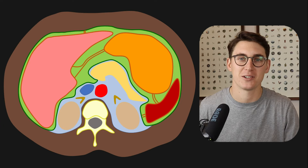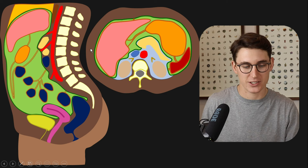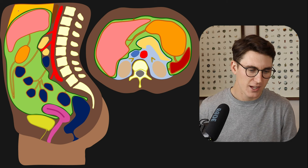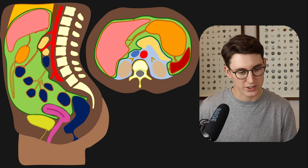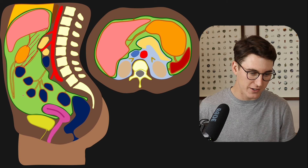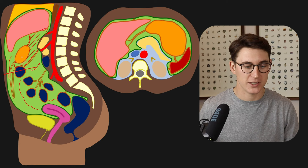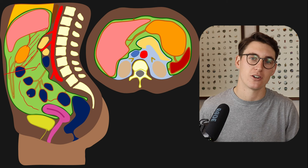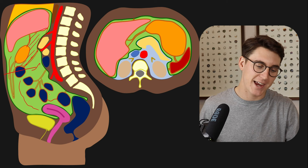Now we've got our sagittal section on the left and axial section on the right. The lesser sac is posterior to the stomach. Our lesser sac extends from this lesser omentum through the greater omentum, with the mesentery of the transverse mesocolon — this whole section is our lesser sac. All of the rest of the peritoneum is part of the greater sac. We can also divide the peritoneal cavity into the supramesocolic region above the transverse mesocolon and the inframesocolic region below it.